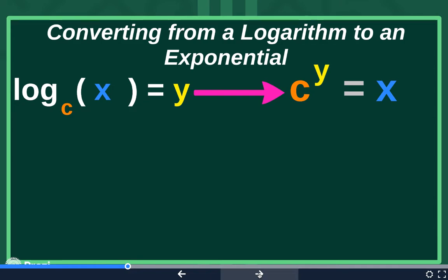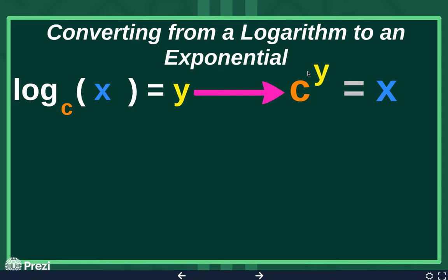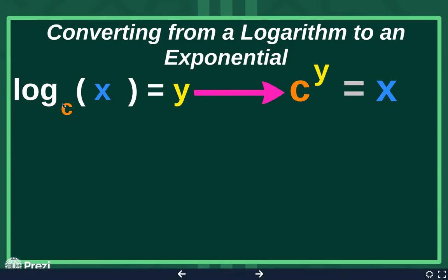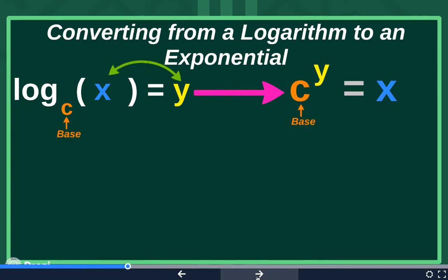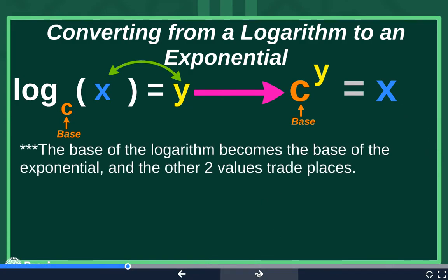The next thing we're going to talk about is very similar to what we just discussed. Sometimes we need to get things out of the logarithm, so it's helpful to convert to an exponential. When you convert from a logarithm to an exponential, the base of the log — the little guy next to the log — is the base of your exponential. The bases stay the same, and then your x and your y trade spots.